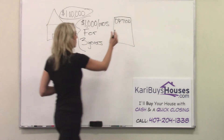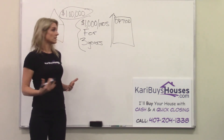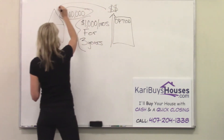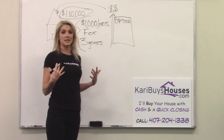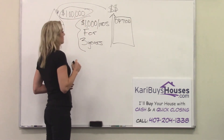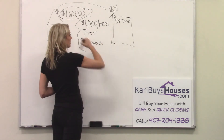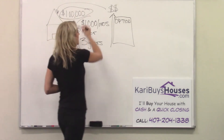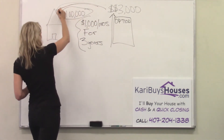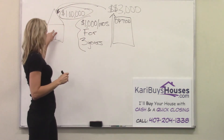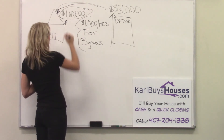One thing I forgot to mention is with the option, there is also what's called an option consideration. That is money that is going to be given to the homeowner who is doing the lease option with you. It's kind of like a deposit, and it should go towards the final purchase price. Typically with an option consideration, we ask three to 5% of the purchase price. So in order for me to have this option to purchase the house, I may have to give the homeowner $3,000, which is my option consideration. That's going to go to the homeowner, and when I exercise my option to buy this house for $100,000, that $3,000 will come off the purchase price — so the balance will be $97,000.